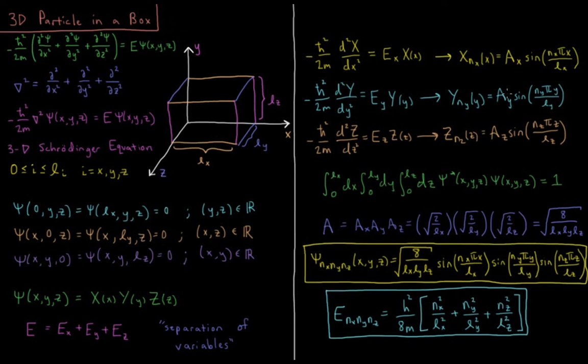So this means that our normalization constants, ax, ay, and az, the product of which is our total normalization constant, are going to be the normalization constants from each of these individual dimensions, square root of 2 over lx, square root of 2 over ly, square root of 2 over lz. Product of all three of those is the square root of 8 over lx, ly, lz.